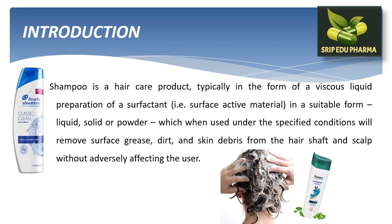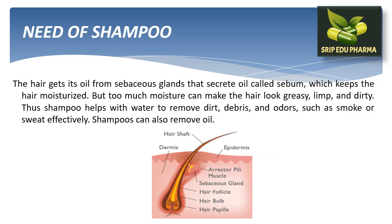Shampoo is a hair care product in the form of a viscous liquid preparation of a surfactant in a suitable form, which when used under specific conditions will remove surface grease, dirt, and debris from the hair shaft and scalp without adversely affecting the user. The hair gets its oil from the sebaceous gland that secretes oil called sebum, which keeps the hair moisturized, but too much can make hair look greasy, limp, and dirty. Shampoo helps with water to remove dirt, debris, and odors such as smoke or sweat effectively, and can also remove excess oil.